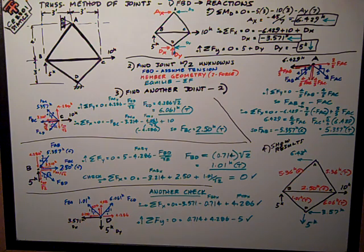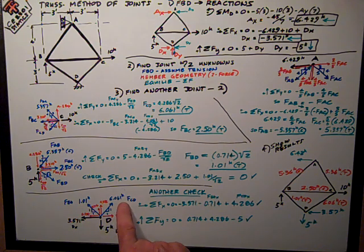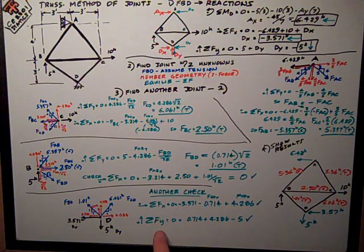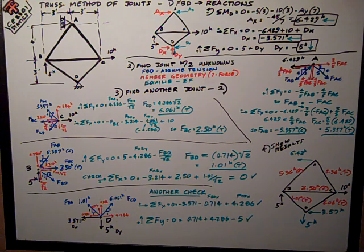I know all these member forces now. They're both tension, FBD and FCD. Just do the math. Sum of forces in the x checks out is equal to zero. Sum of forces in the y checks out is equal to zero.